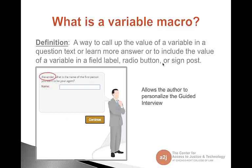So what is a variable macro? A variable macro is a way to call up the value of a variable in a question text or learn more answer, or to include the value of a variable in a field label, radio button, or signpost. As you can see from the screenshot in the question text, it's personalized for the person going through the interview — and that's one of the benefits of using variable macros: it really allows you to personalize the guided interview.